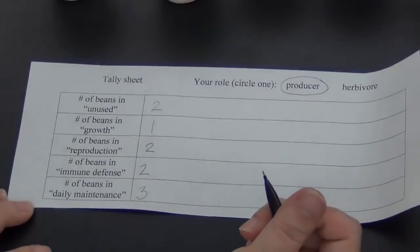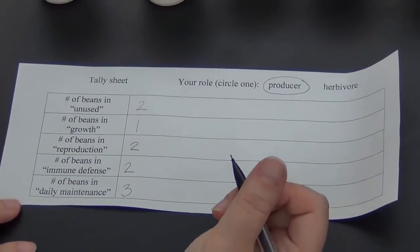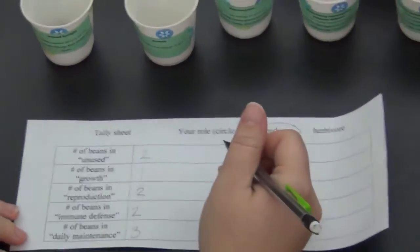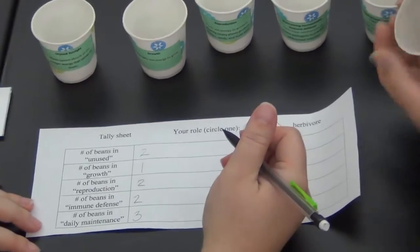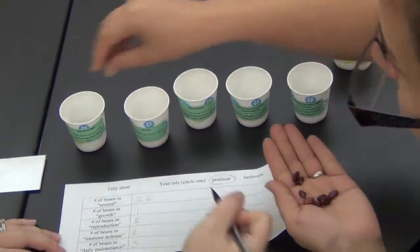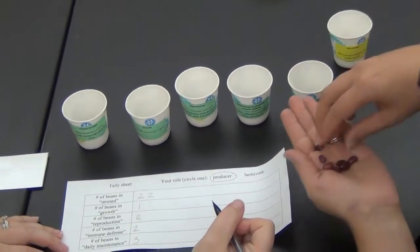What do all organisms need to do? They need to grow, reproduce, and stay alive or maintain homeostasis. Again, maybe somebody else can be tallying, the other partner of the pair can be tallying as you put beans in those cups. Maybe you can just write twos like that.